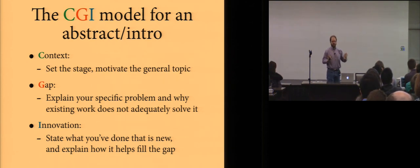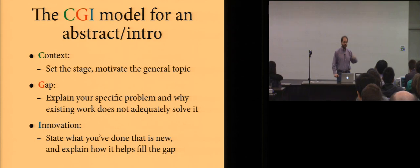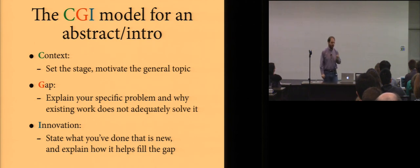Then, once you've set that stage, and usually, that's pretty quick, like a paragraph or two at most. Then, you move to the gap. And this is critical. This is where you explain your specific problem. And you explain why existing work does not adequately solve it. A lot of people, this is probably the most common problem in abstracts and intros that I find, is that people do not clearly explain what the gap is. They don't say, what exactly is the problem they're solving? They just sort of set the context, and then they say, we did something. So, you have to explain the gap. And then, once you've done that, then you move to innovation. You state what you've done that is new, and you explain how it helps fill the gap.